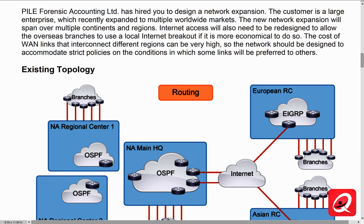Pyle Forensic Accounting has hired you to design a network expansion. The customer is a large enterprise which recently expanded to multiple worldwide markets. The new network expansion will span over multiple countries and regions. Internet access will also need to be redesigned to allow the overseas branches to use the local internet breakout if it is more economical to do so. The cost of the WAN links that interconnect the different regions can be very high, so the network should be designed to accommodate strict policies on conditions in which some of those links will be preferred over the others.